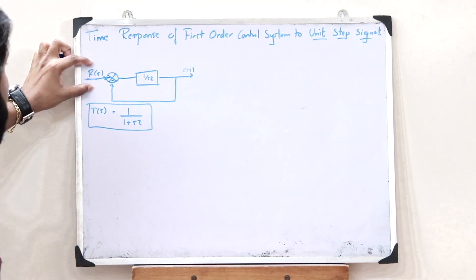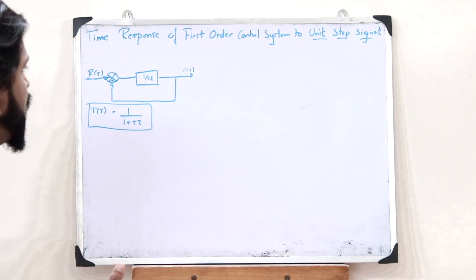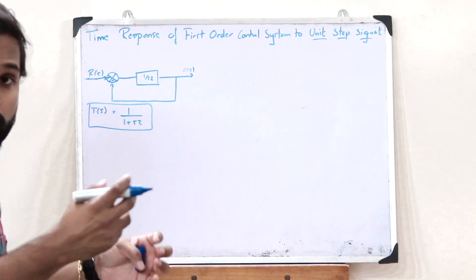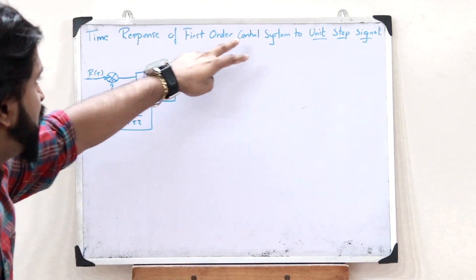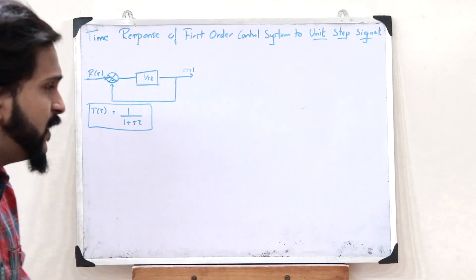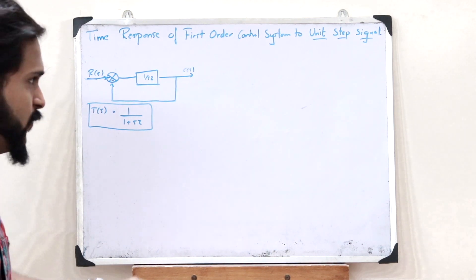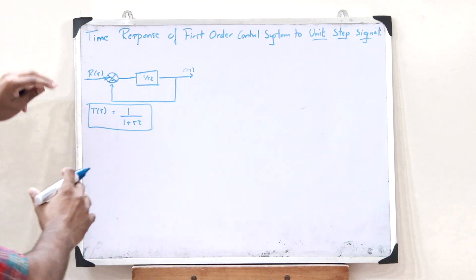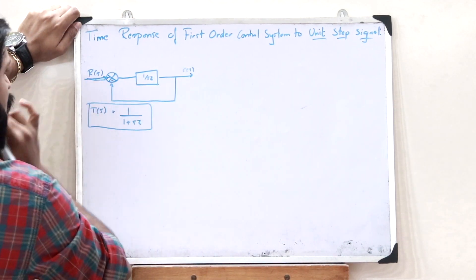When we apply certain test signals to the input, we get a particular time response. When we apply a unit step signal as the input, whatever we get as the output is simply the time response of this first order control system to the unit step signal. Let us now apply a unit step signal as input.